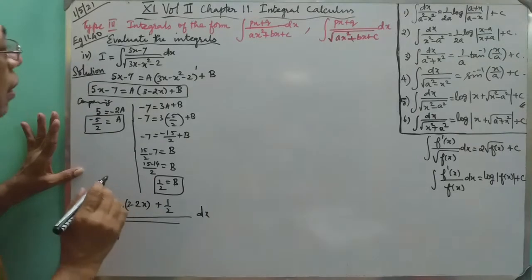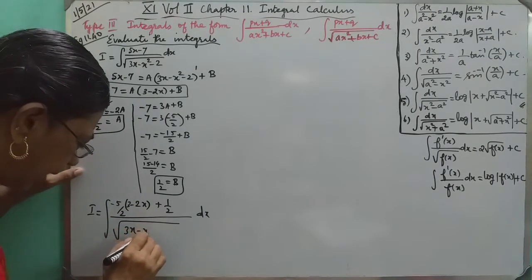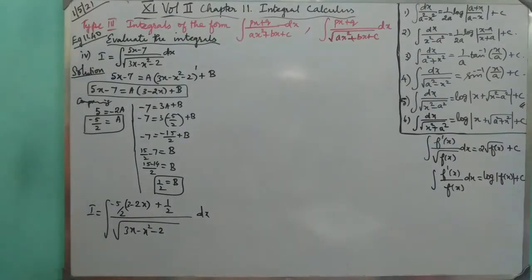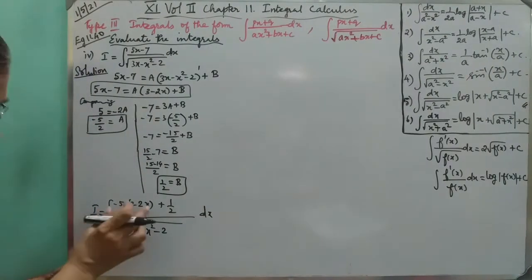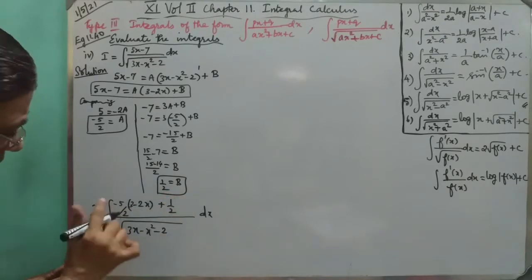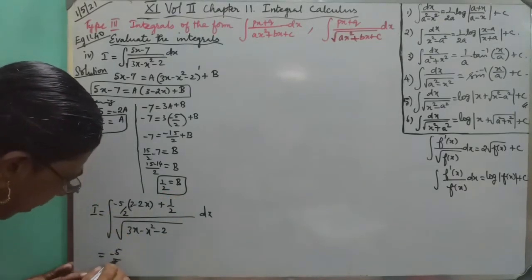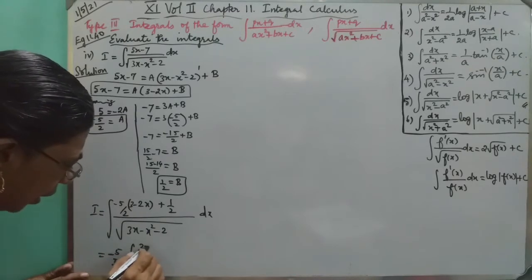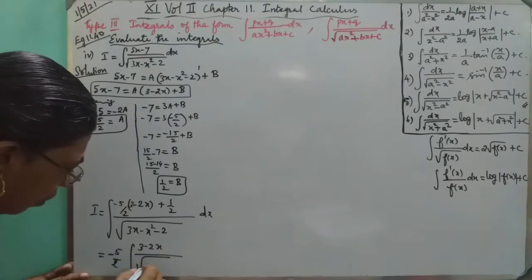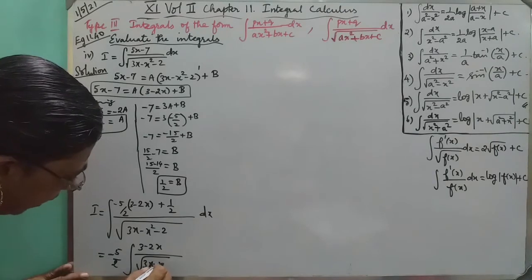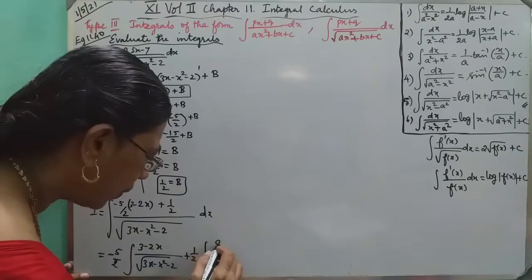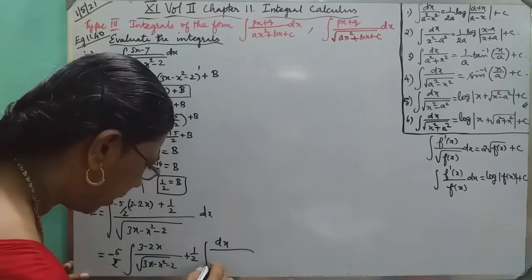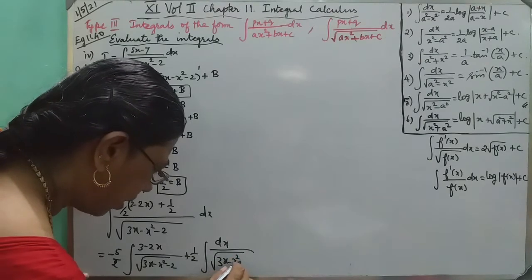The denominator is the root of 3x minus x squared minus 2. So one part of the numerator is handled. The second integral: minus 1 by 2, then minus 5 by 2 into the integral of 3 minus 2x divided by root of 3x minus x squared minus 2, plus 1 by 2 only, put in the denominator as 3x divided by 3x minus x squared minus 2.